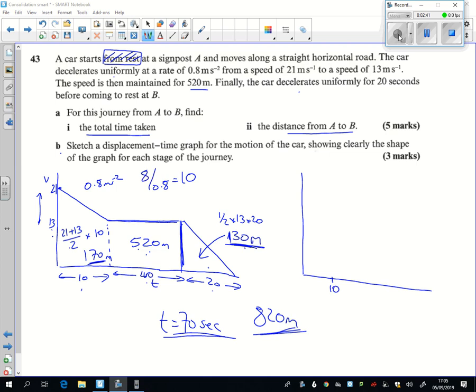We know something's going to happen at 10 because something changes there. We know something's going to happen at 50 because it changes there. And we know something's going to happen at 70 there. And I suppose the easiest bit to think about is this part here.